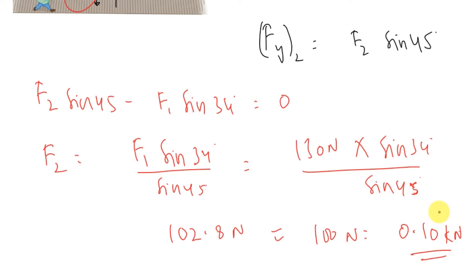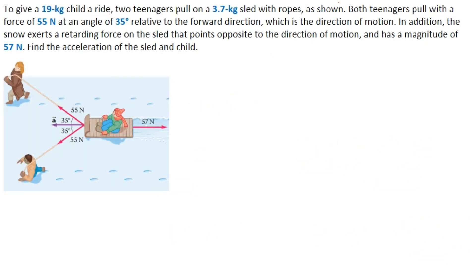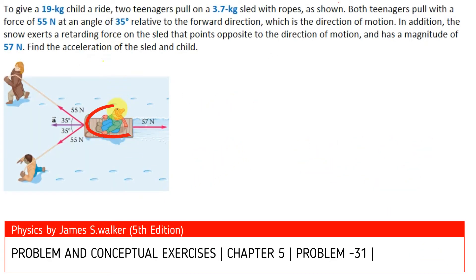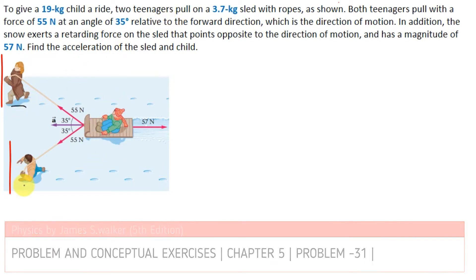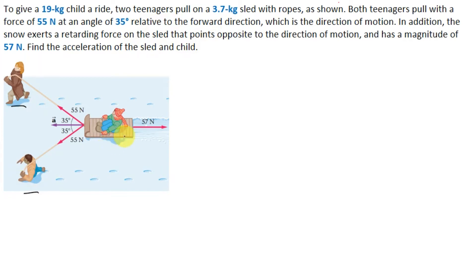So with this force the second crewman should pull so that the net force of the two crewmen is in the forward direction. In the next problem, to give a 19 kg child a ride, two teenagers pull a 3.7 kg sled. Both teenagers pull with a force of 55 Newtons at an angle of 35 degrees relative to the forward direction, and snow exerts a retarding force of 57 Newtons on the sled. We need to find the acceleration of the child and the sled.